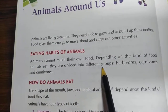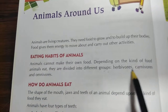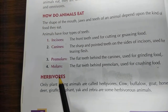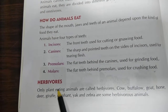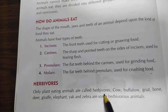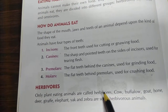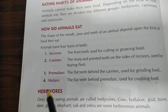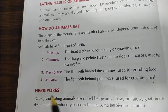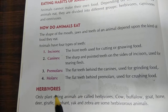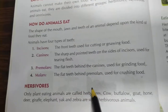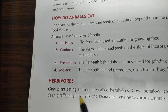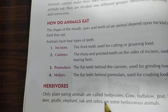Previously, we saw animals are grouped into three groups: herbivores, carnivores, and omnivores. Now we see the definition. Herbivores means only plant-eating animals. 'Herb' means plant, and 'vores' means eating. Animals that eat only plants are called herbivores. They don't eat any meat or flesh. Examples include cow, buffalo, goat, horse, deer, giraffe, elephant, yak and zebra.